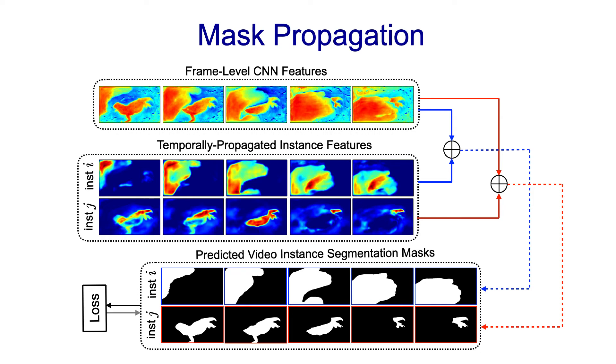Our mask propagation framework, including feature propagation implemented by deformable convolutions as well as the frame-level feature extraction network, is optimized end-to-end to minimize a soft intersection over union loss which is computed for each object instance over the entire video clip.